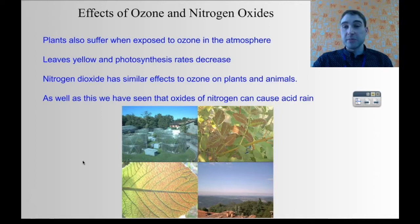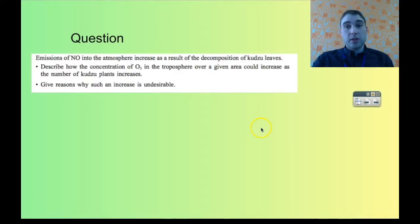Nitrogen dioxide has similar effects to ozone on plants and animals. We've also seen the oxides of nitrogen can cause acid rain. They react with water in the atmosphere to produce nitrous and nitric acid.